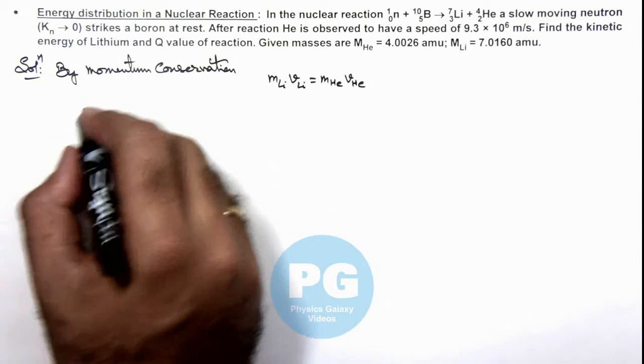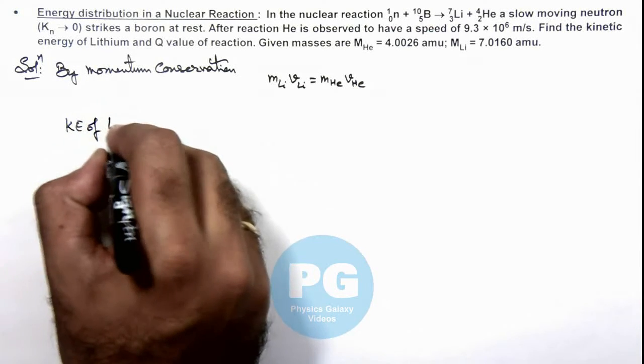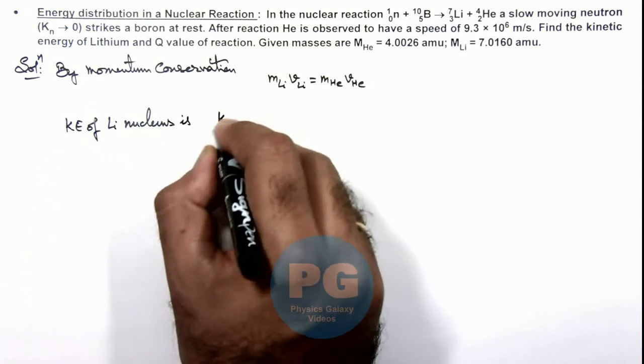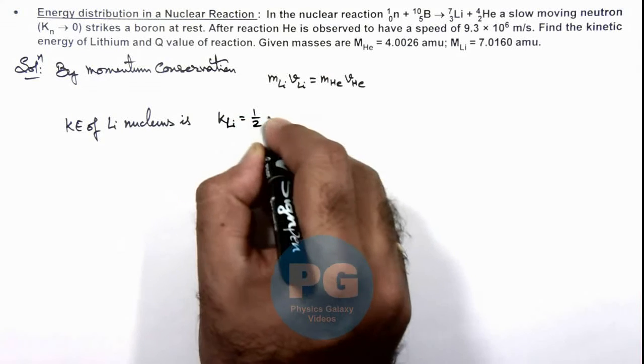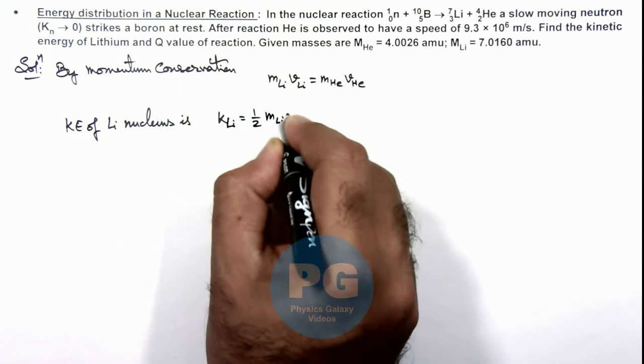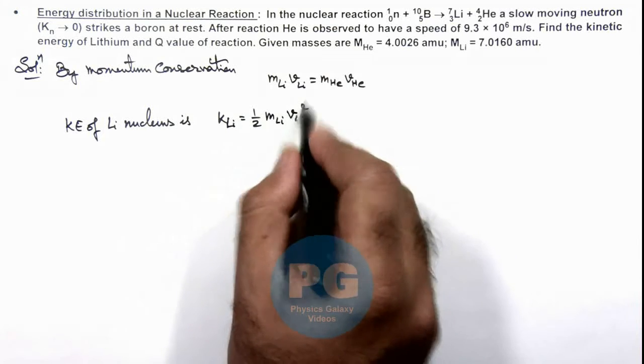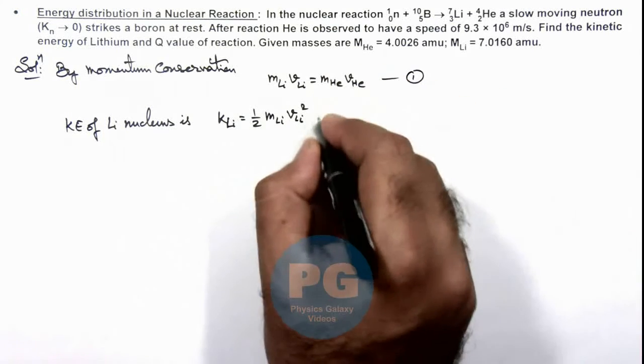So here we can calculate the kinetic energy of lithium nucleus. The kinetic energy of lithium we can write as KE_Li = ½ m_Li v_Li². Where we can substitute the value of v_Li from this equation. From equation 1, we can substitute half...